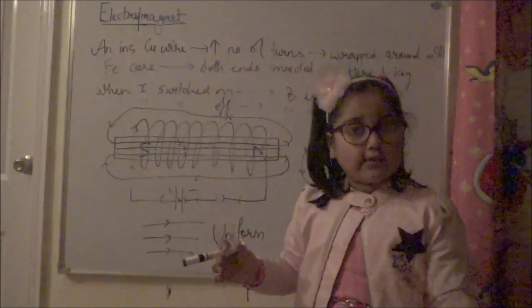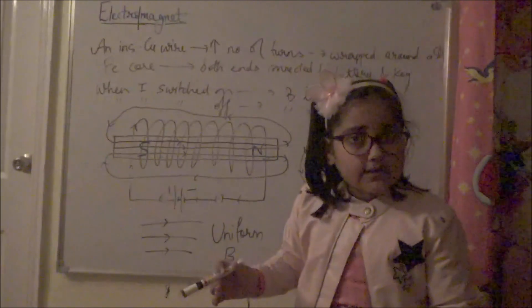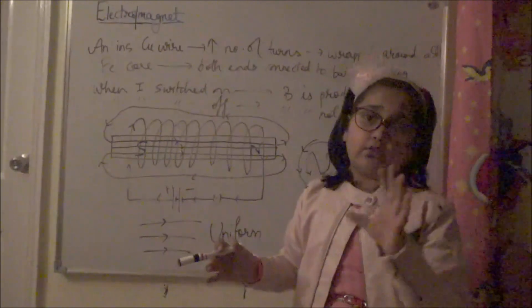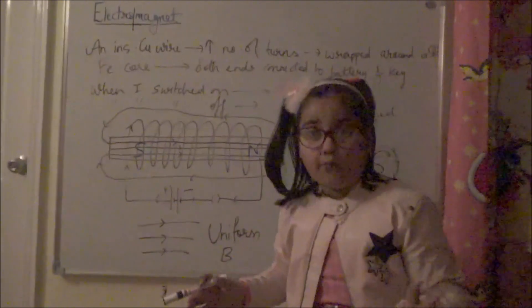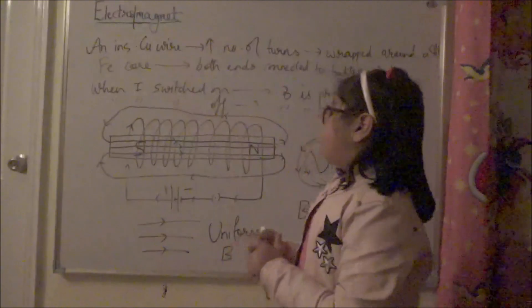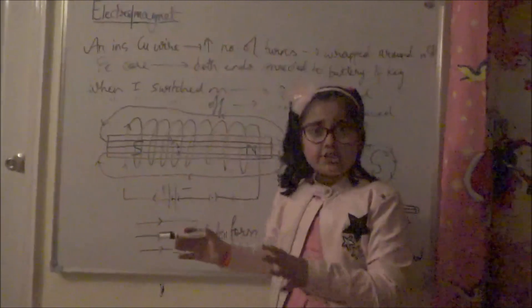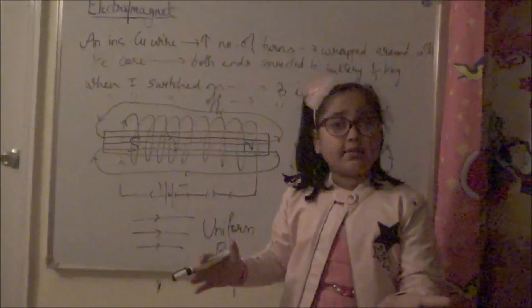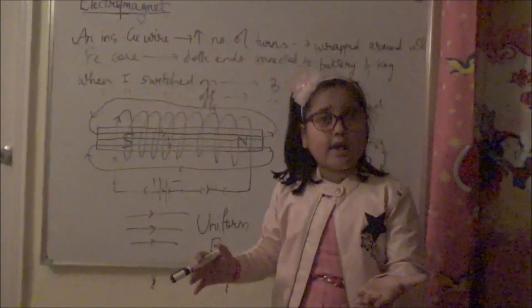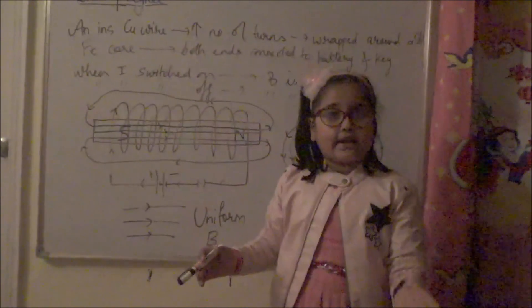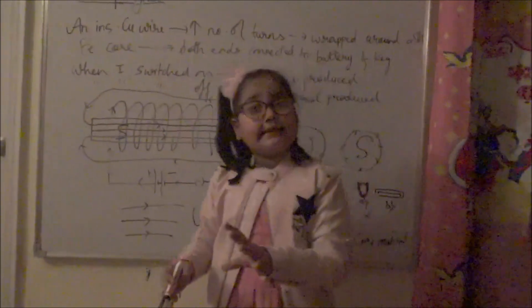The electromagnet loses all its magnetism immediately when the current is switched off. The working principle of an electromagnet is the magnetic effect of electric current.